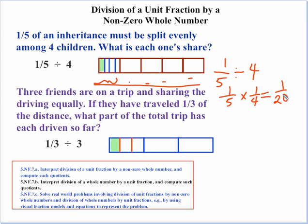Let's look at a second scenario. You have three friends on a trip sharing driving equally. If they have traveled one-third of the distance, what part of the total trip has each one driven so far? Our visual represents the whole trip split into three parts. That one-third of the way they've driven so far is split into three equal parts. If we're dealing with just one of those pieces, we have to realize that little piece is with respect to the whole trip. If we subdivide the other two pieces, we have a total of nine. So each friend would have driven one-ninth of the total trip.